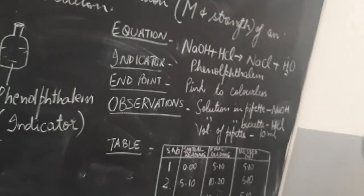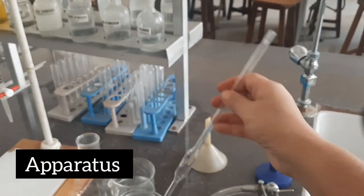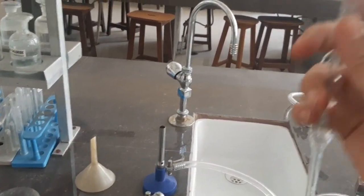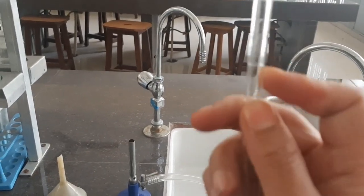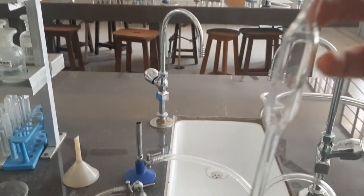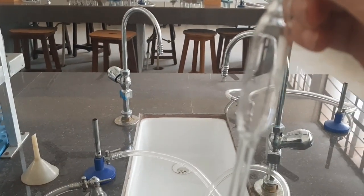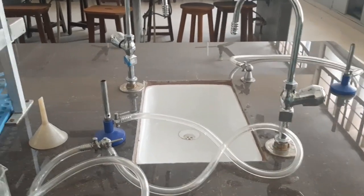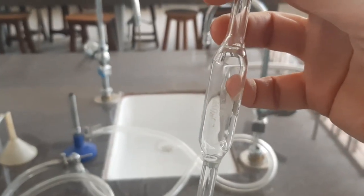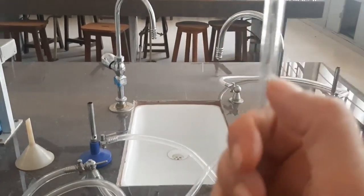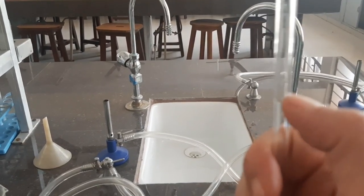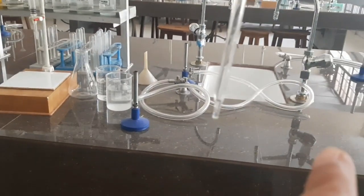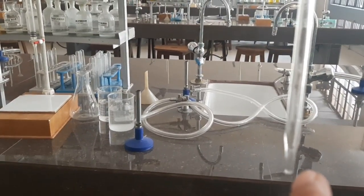Let me introduce you to the apparatus. This is a pipette. As you can see, it has a graduation mark at one part and a bulb. On the bulb is written the volume — the volume of this pipette is 10 ml. This means that if we fill liquid in this pipette up to the mark, it will be exactly 10 ml. This end is a pointed end, and before you start working with a pipette you must check that this end is not broken, and neither is the top chipped in any way.